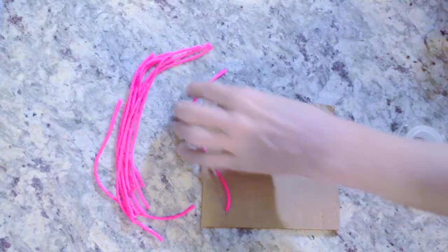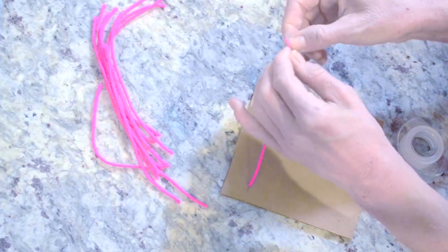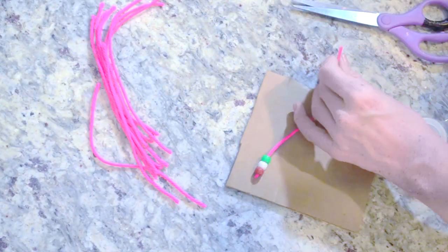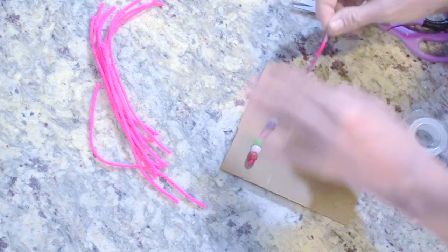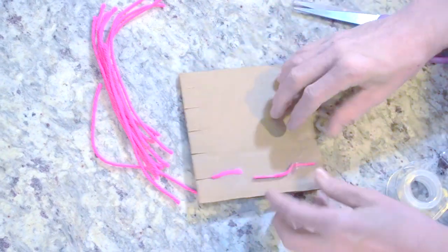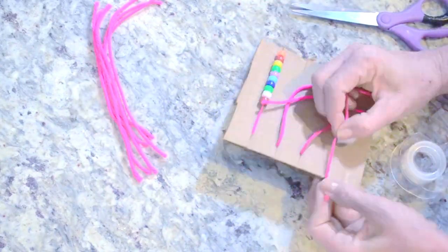And last, I'm making a cardboard abacus using yarn and some pony beads, and this is just going to actually be two little pieces. The first one I'm doing 10, 9, 8, 7, and 6,